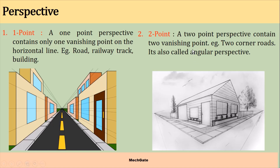A two-point perspective projection has two vanishing points, also known as angular perspective. In this figure, this road vanishes at one point, and this road vanishes at another point. Similarly, this side of the house vanishes at one point, and the other side of the house vanishes at the other point. This is called a two-point perspective projection.